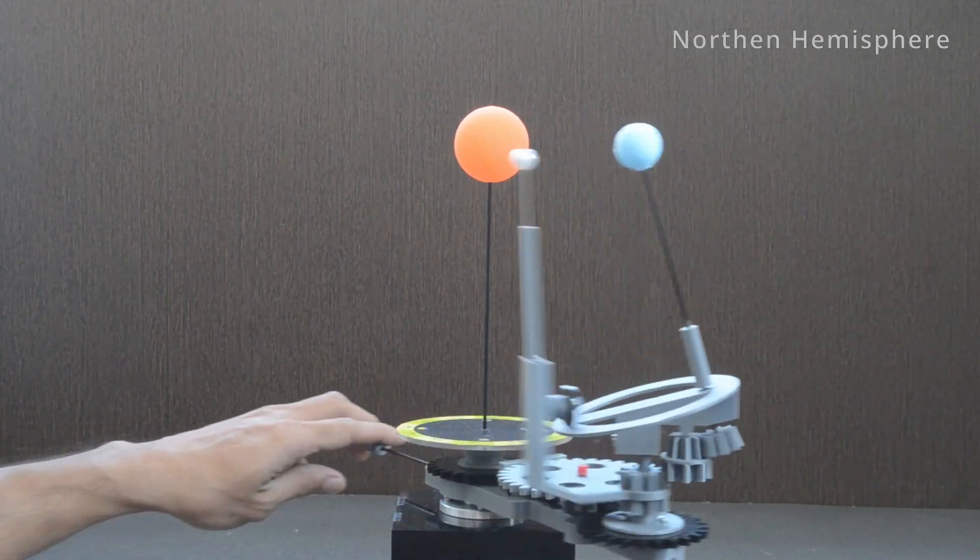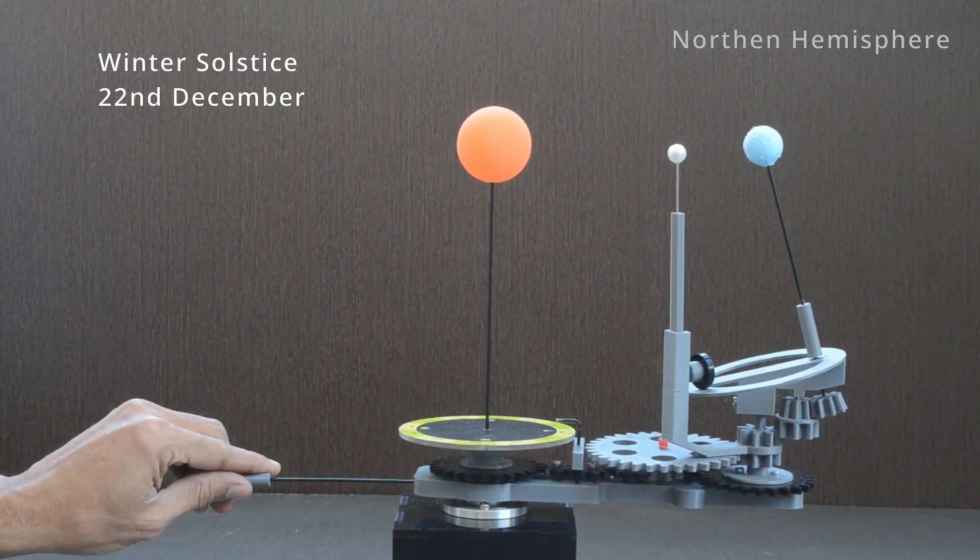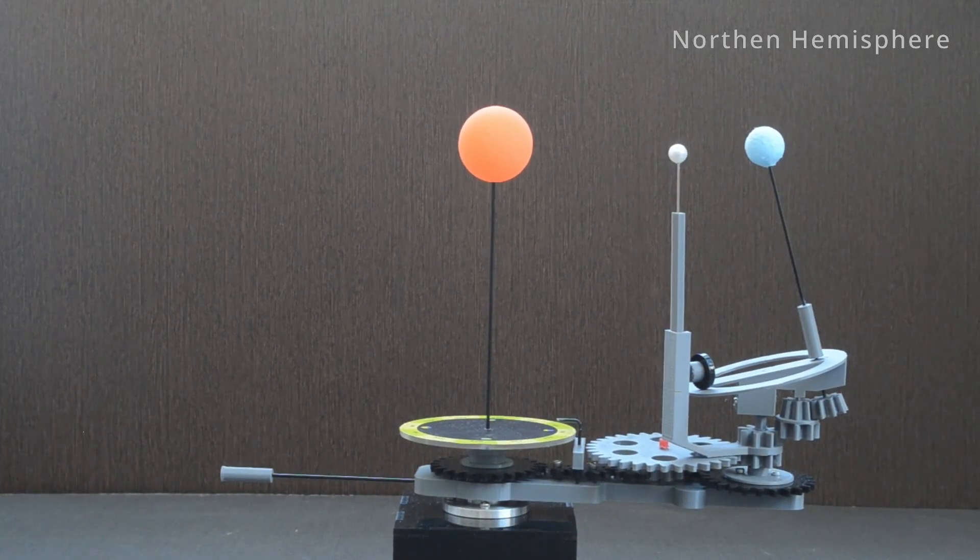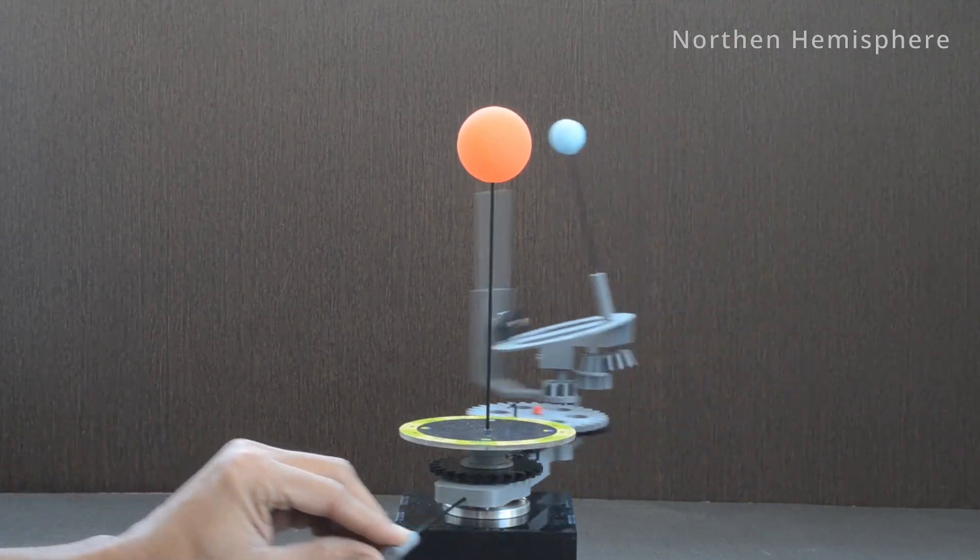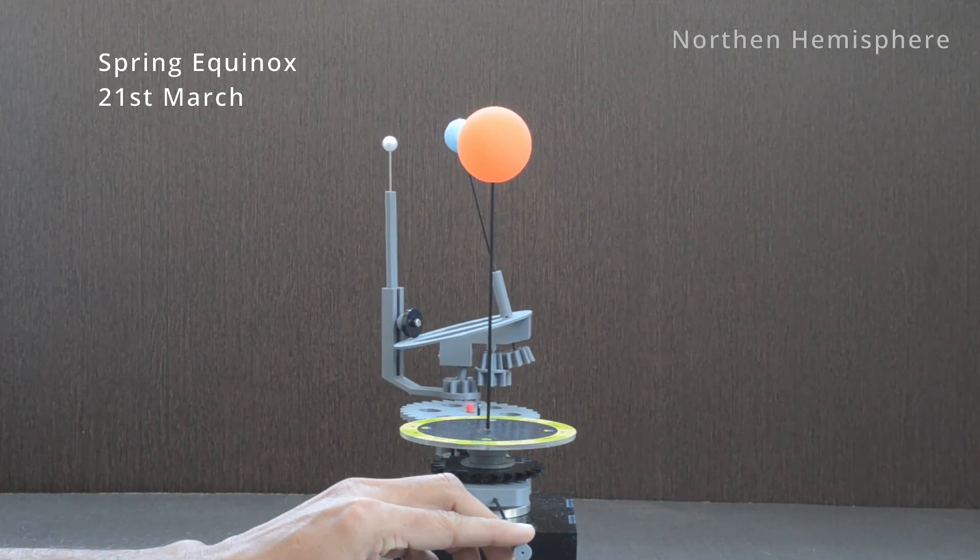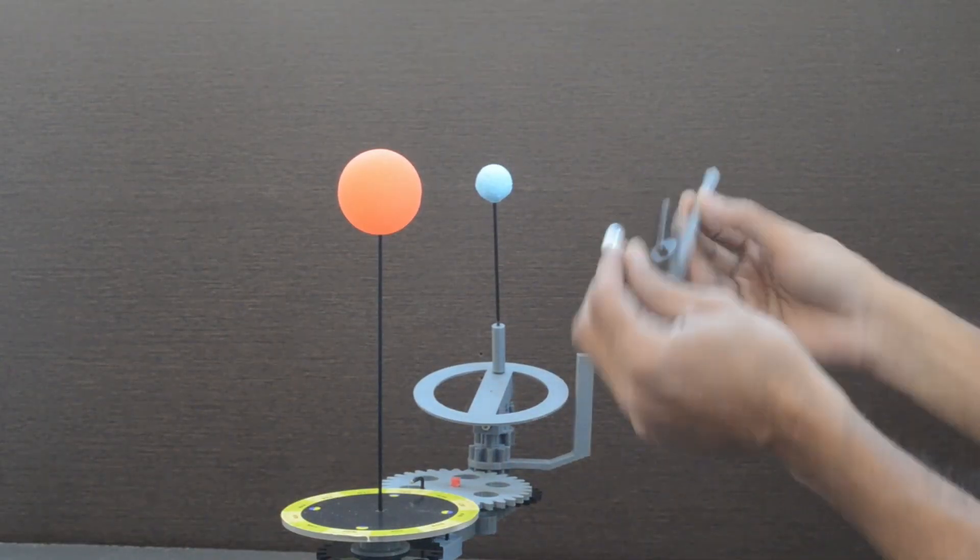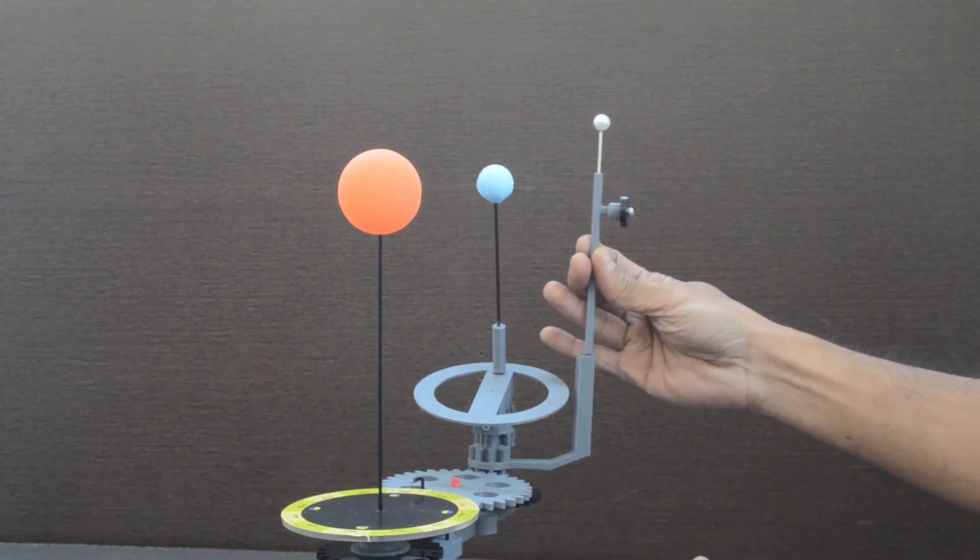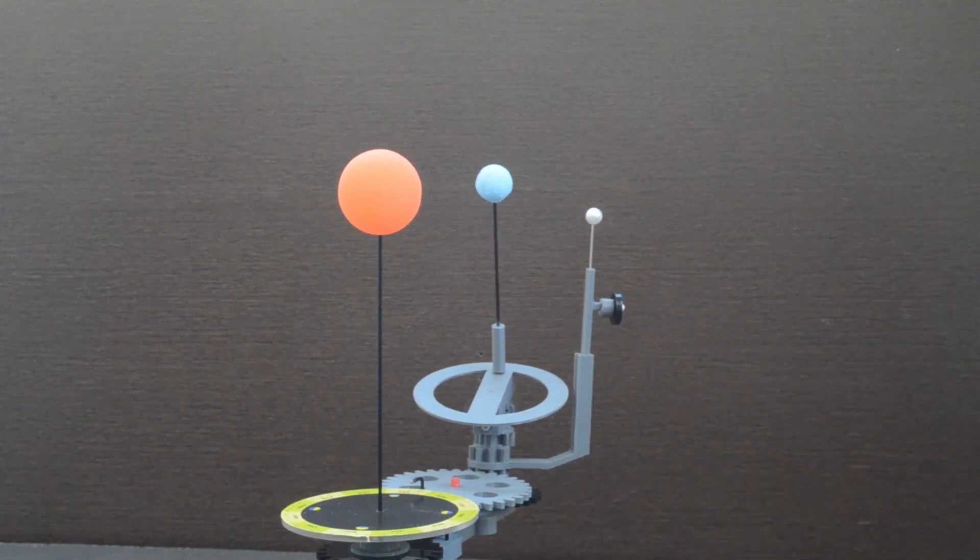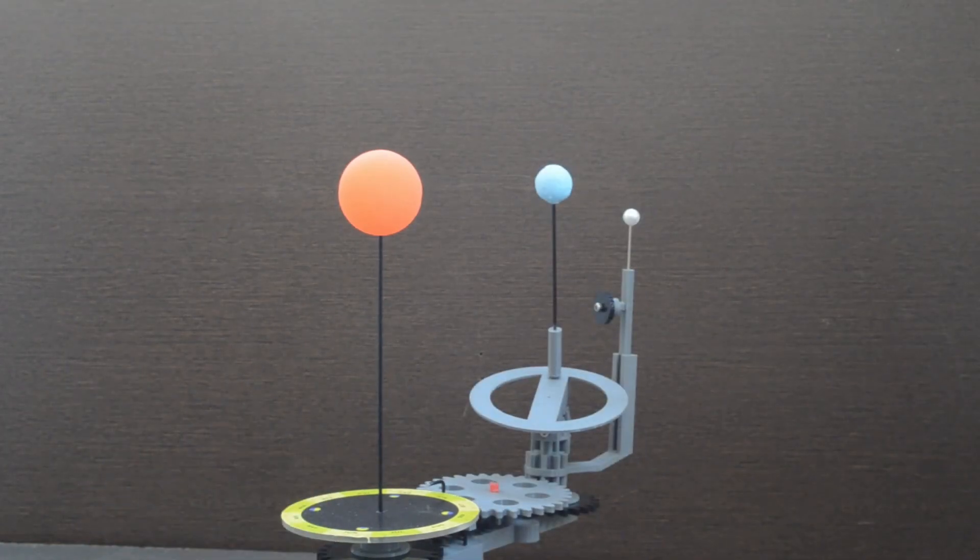Winter Solstice on 22nd December and Spring Equinox on 21st March can be shown. Position of the Moon can be switched upside down as well to prevent it from moving in an inclined orbit. This configuration is helpful to explain occurrences of eclipses only on certain dates.